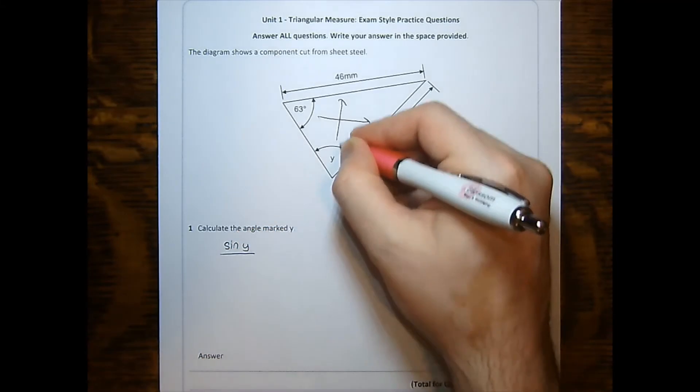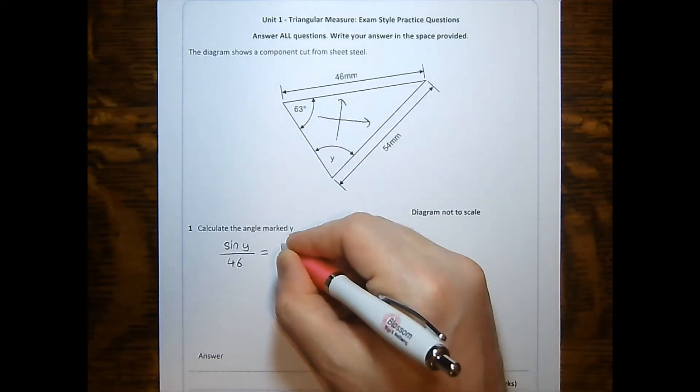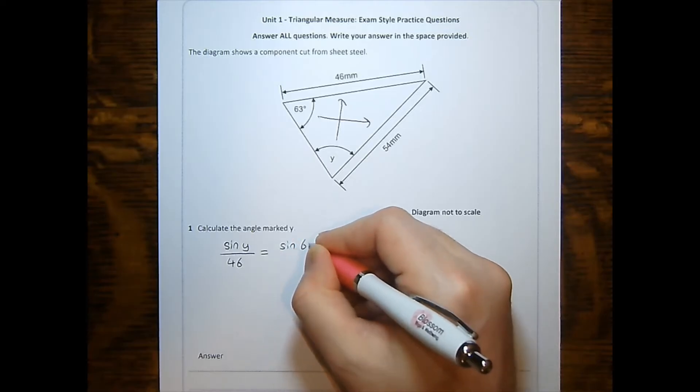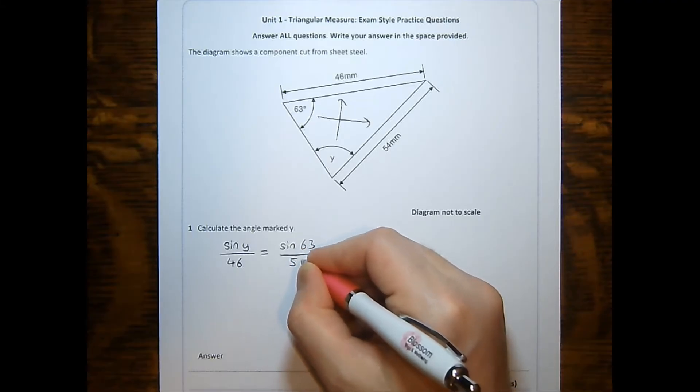On the bottom, we'll have the opposite length of 46. And this will be equal to sine of the other angle, sine of 63 degrees, with its opposite length of 54 underneath.